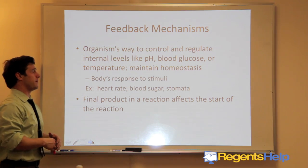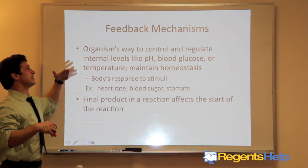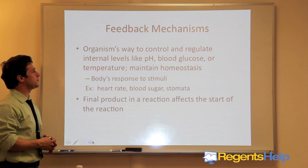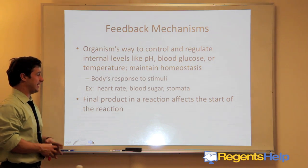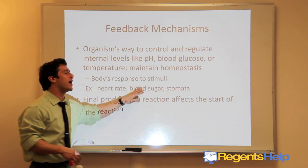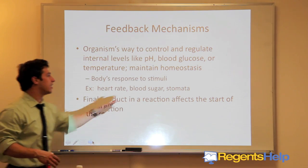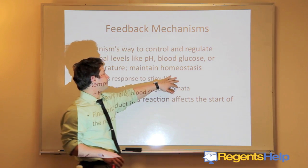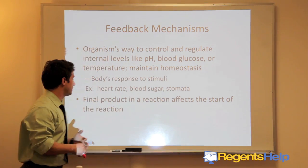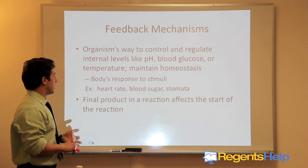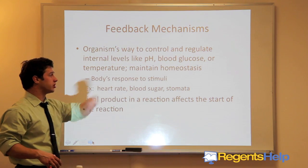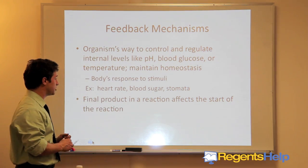A feedback mechanism is an organism's way to control and regulate internal levels like pH, blood glucose, or temperature. It helps maintain homeostasis and represents your body's response to stimuli or observable differences in the external environment. Feedback mechanisms might affect your heart rate, your blood sugar, or the stomates in plants.